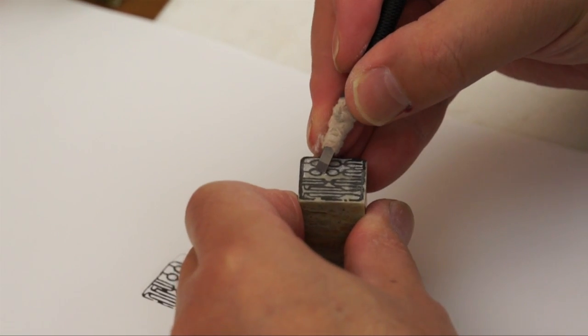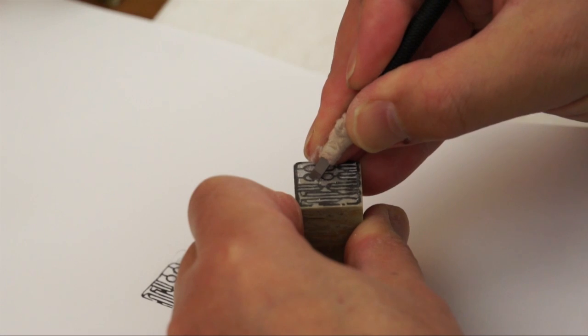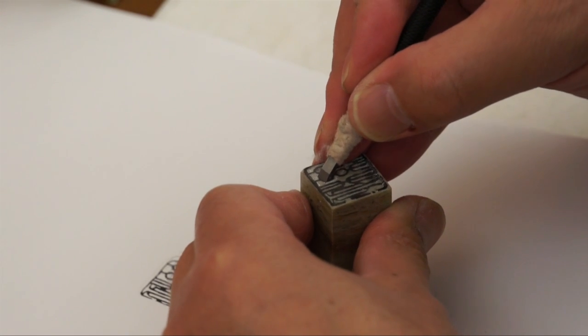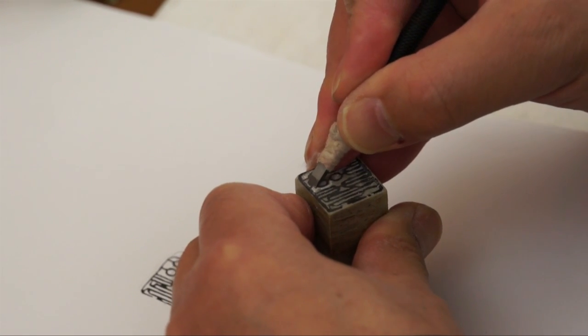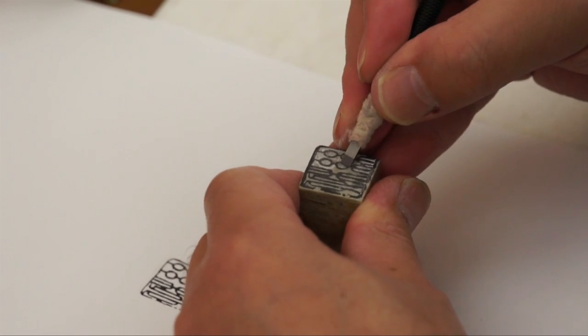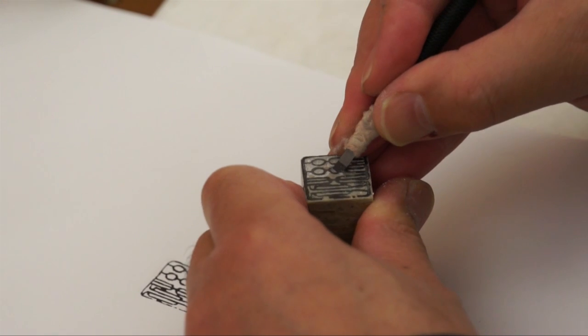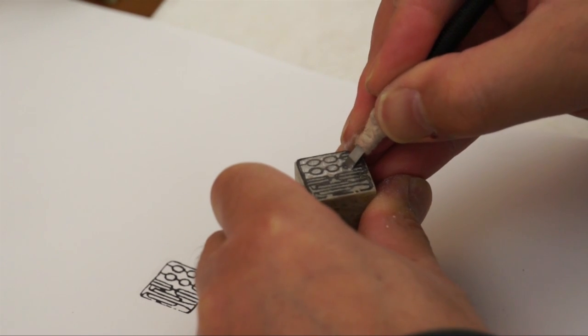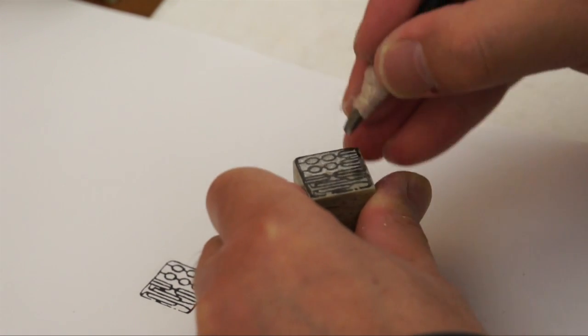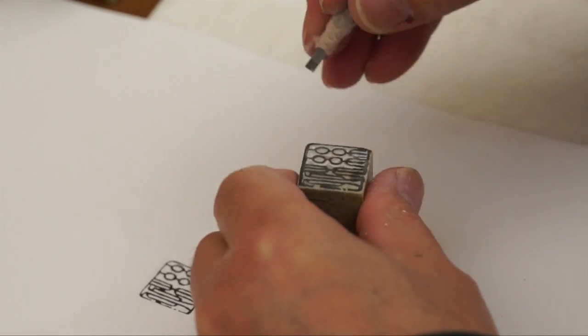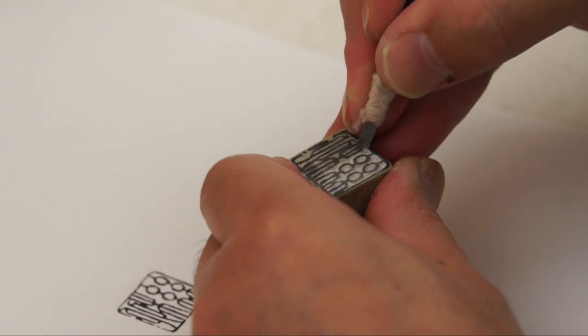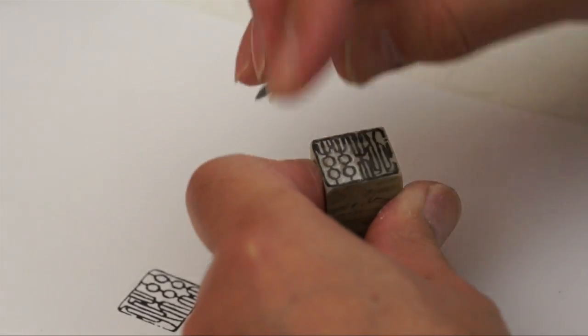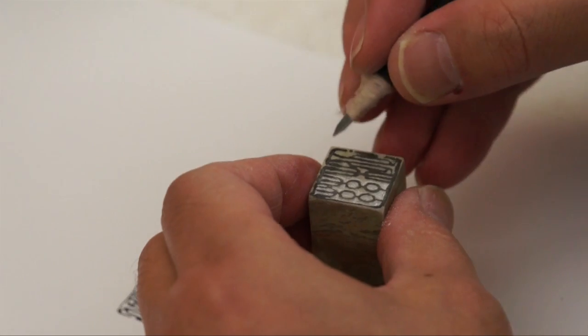And I use a small knife to do this intricate lines. I started with the second character, Si, or silk. Now I'm working on this Liu, or willow.